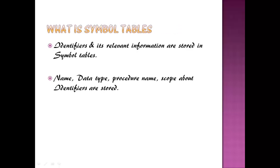What is Symbol Table? Identifiers and its relevant information are stored in Symbol Tables. What is an identifier? An identifier is simply the name of a program or name of the variable within a program that are used to identify the relevant data or information.